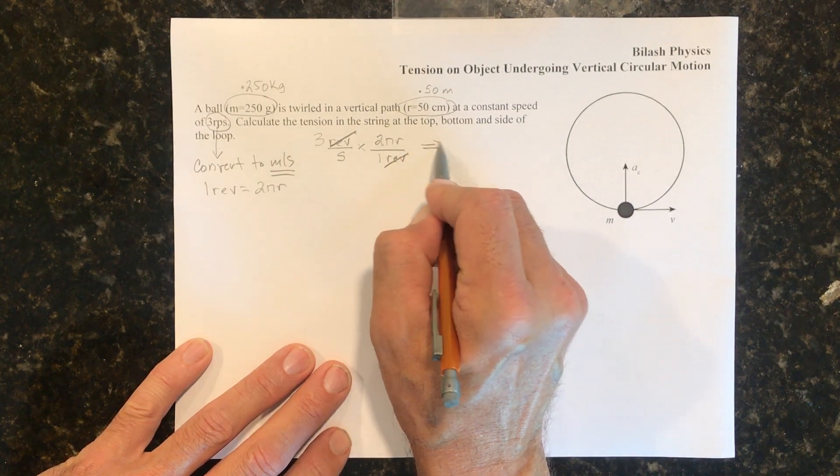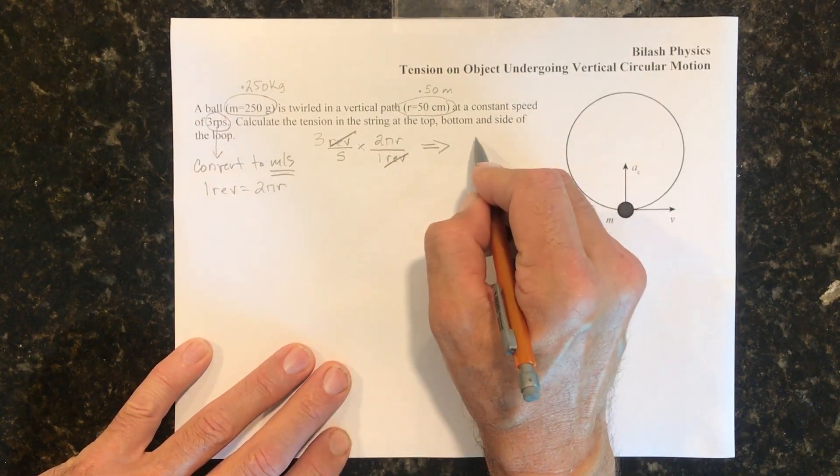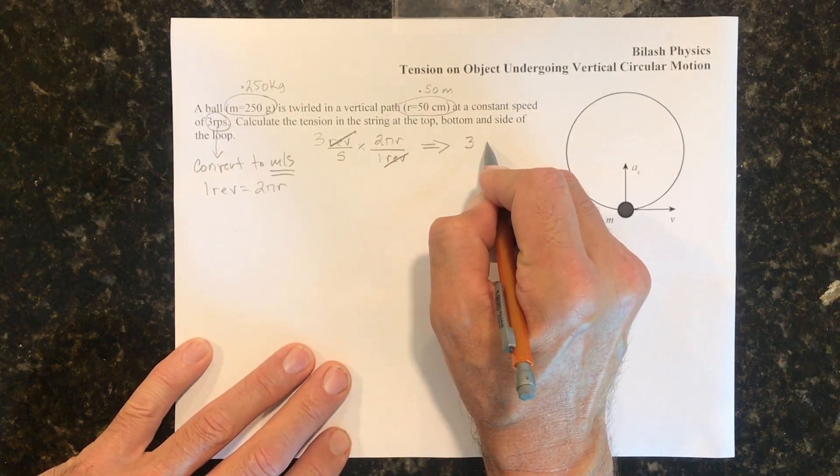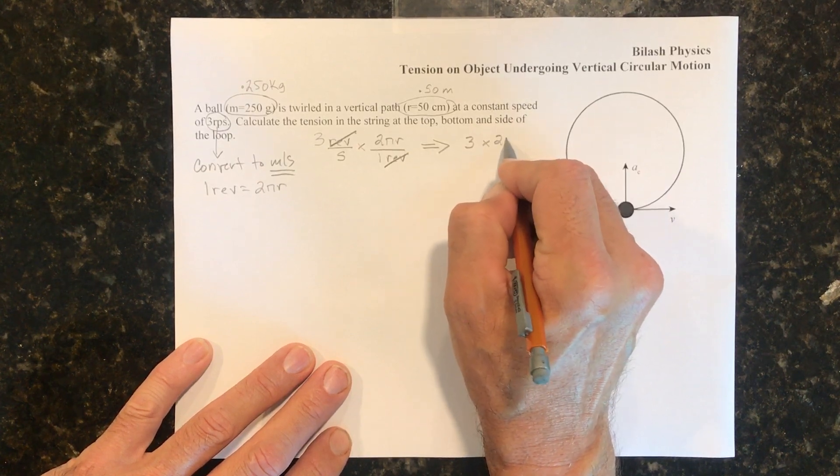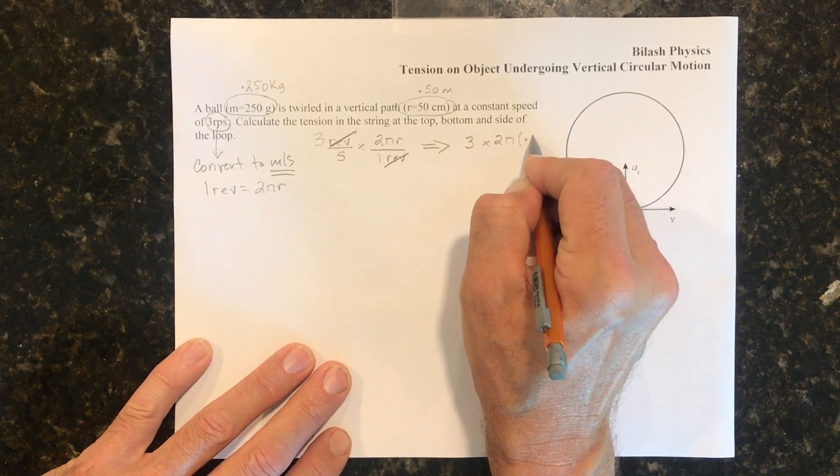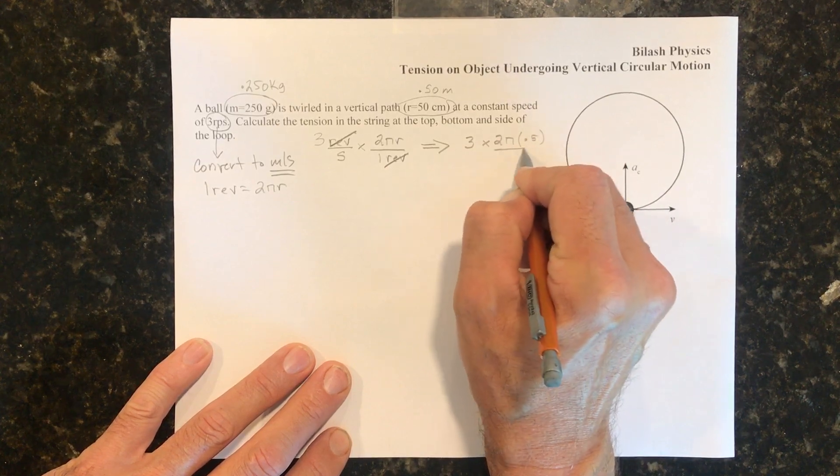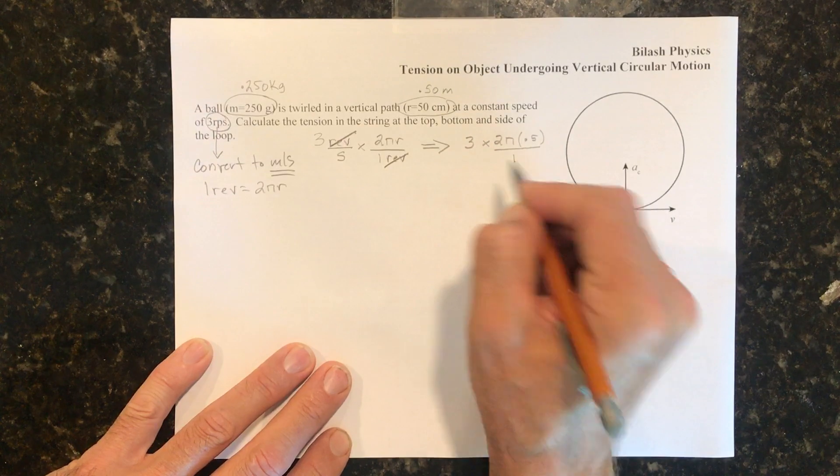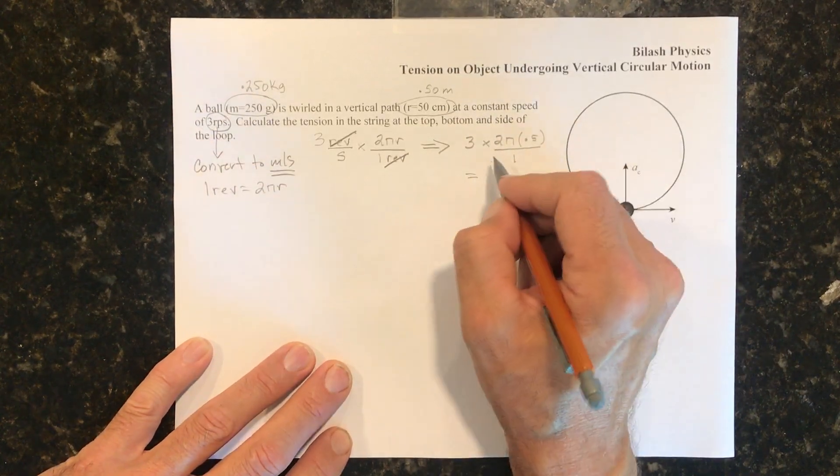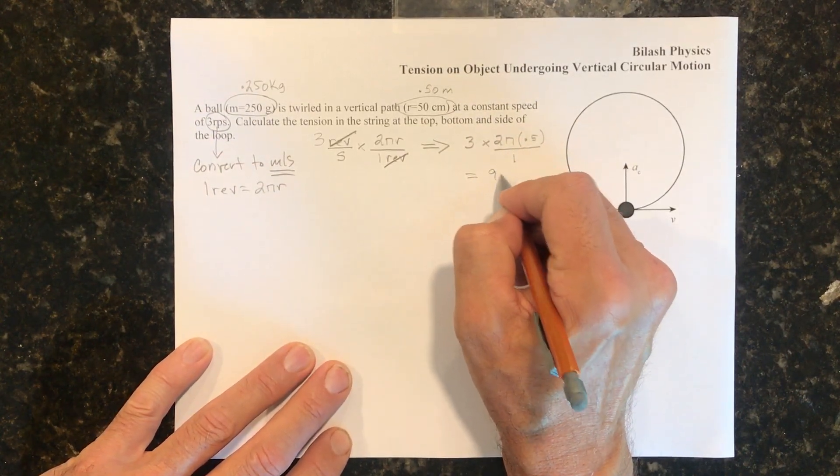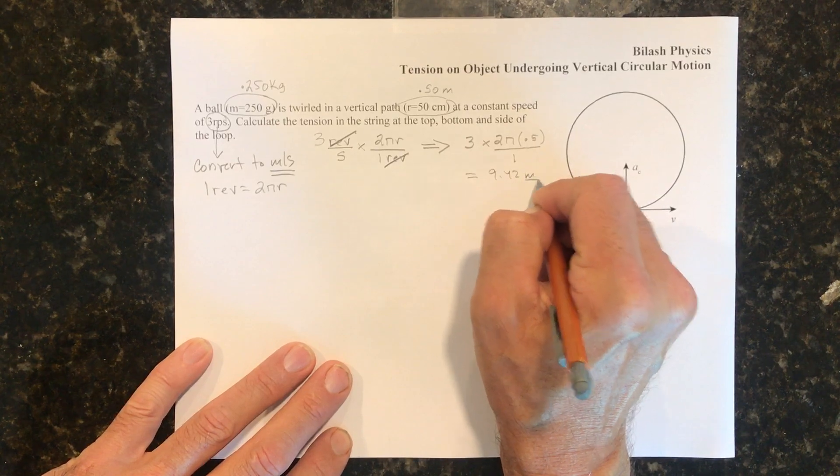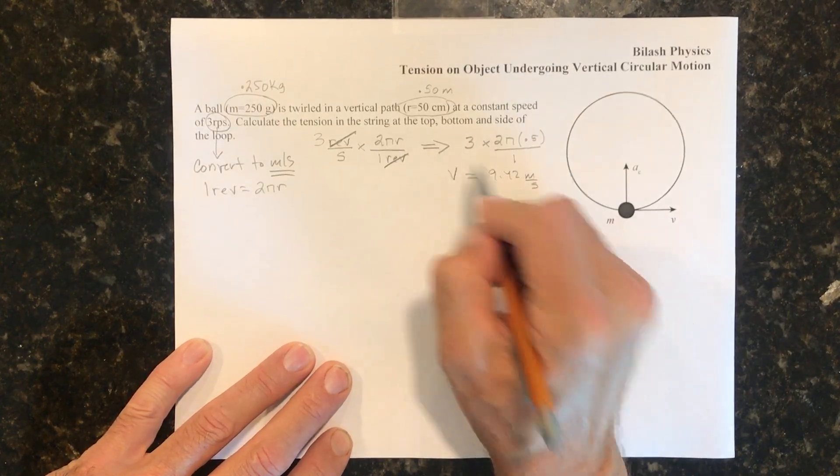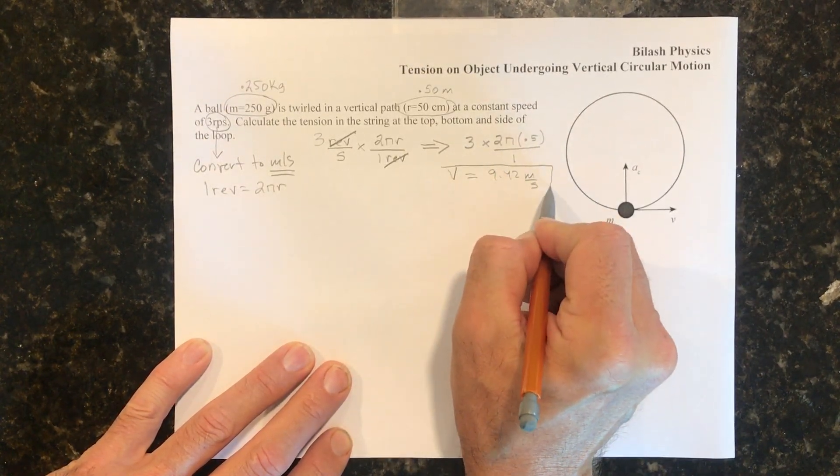So let's proceed to do that. So we have 3 times 2π times 0.5 divided by 1. So this is going to end up being 9.42 meters per second. That's the velocity in linear terms.